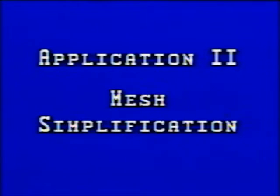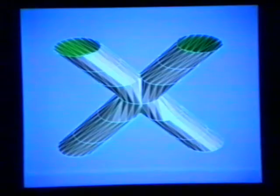Mesh simplification refers to the problem of reducing the number of vertices in a dense mesh while minimally perturbing its shape. To simplify meshes, we first randomly sample a number of points on the mesh, then use the dense mesh as the starting point for optimization. In this example, we have sampled 4,500 points from an initial mesh consisting of 260 vertices.